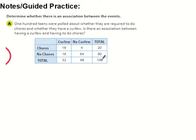They asked: do you have a curfew? Out of the 100, 32 of them had a curfew and 68 of them did not. Then they asked: do you have chores? 20 of them had chores and 80 did not. Out of the 20 with chores, 16 had both a curfew and chores. And 64 of them had neither a curfew nor chores. So we have totals for all, chores, no chores, curfew, no curfew, and each combination.